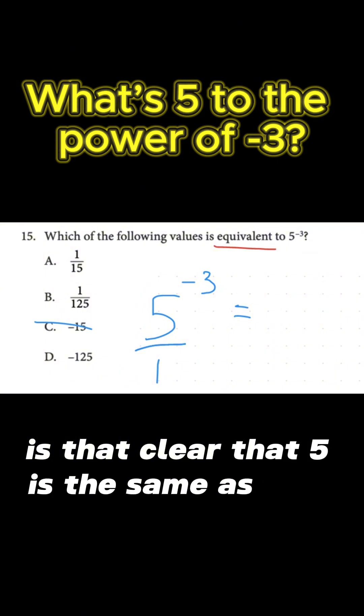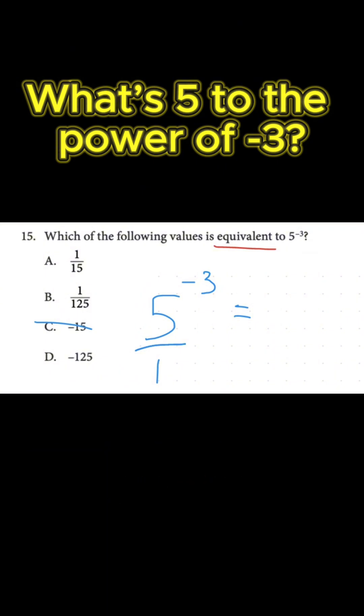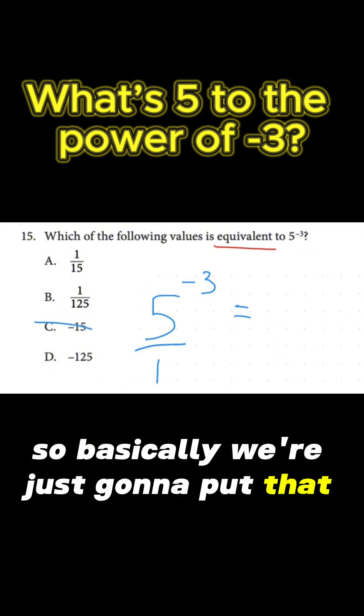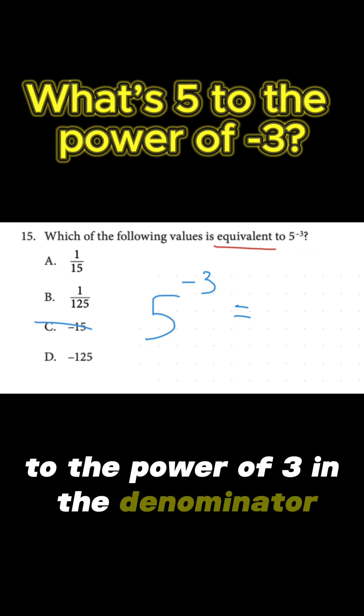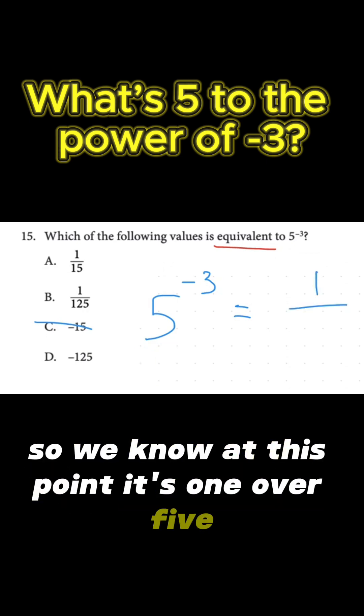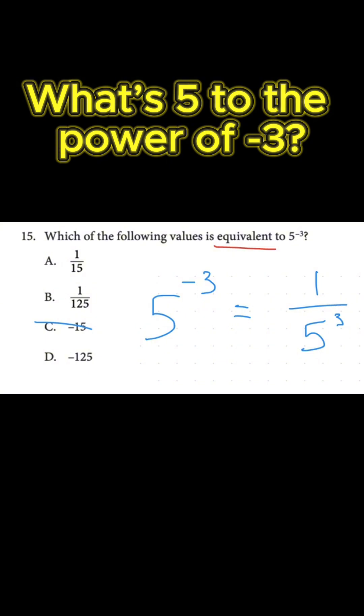Is that clear, that 5 is the same as 5 over 1? Yes. Okay. So basically, we're just going to put that 5 to the power of 3 in the denominator. So we know, at this point, it's 1 over 5 to the power of 3. So far. Does that make sense?